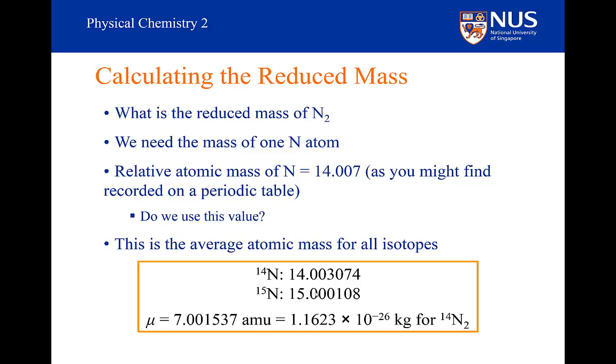But we could see the effect of differing isotopes in the spectra of something like carbon monoxide. The bottom line is, you cannot use the relative atomic mass, you must use the isotopic mass.